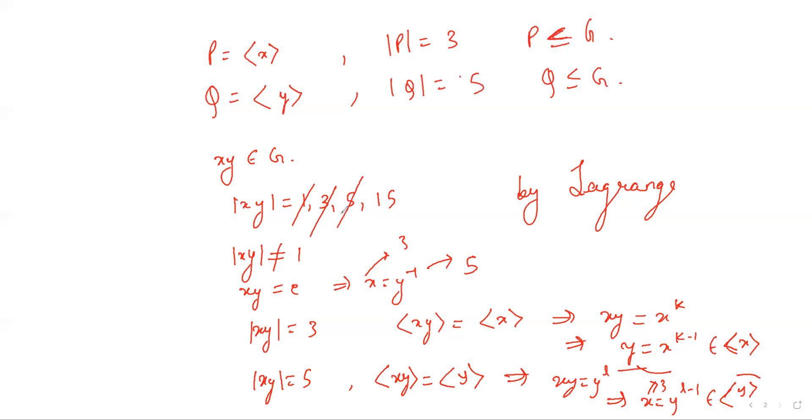So the only possible order of xy is 15. So G is generated by xy and hence G is cyclic, which implies G is abelian.